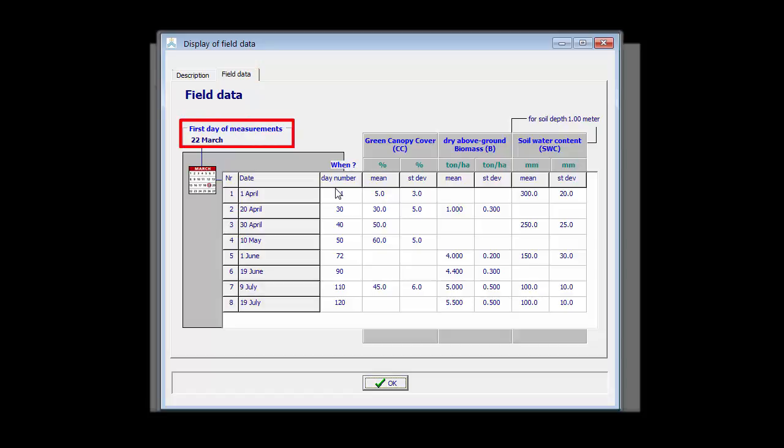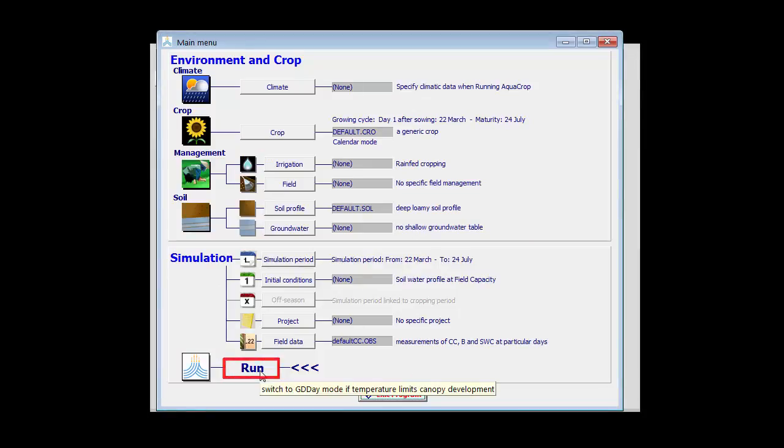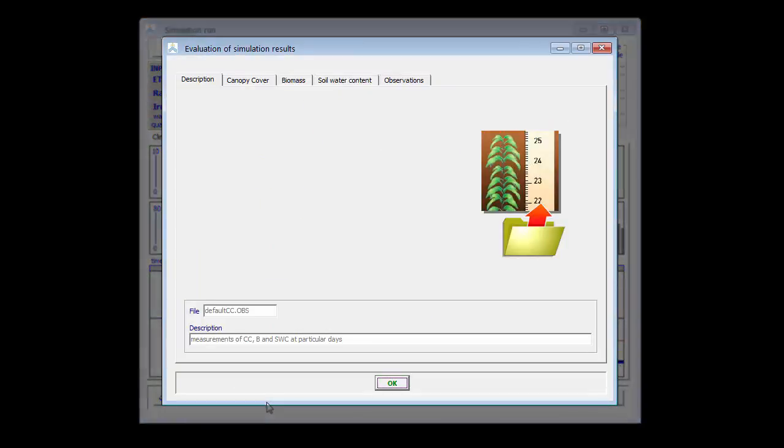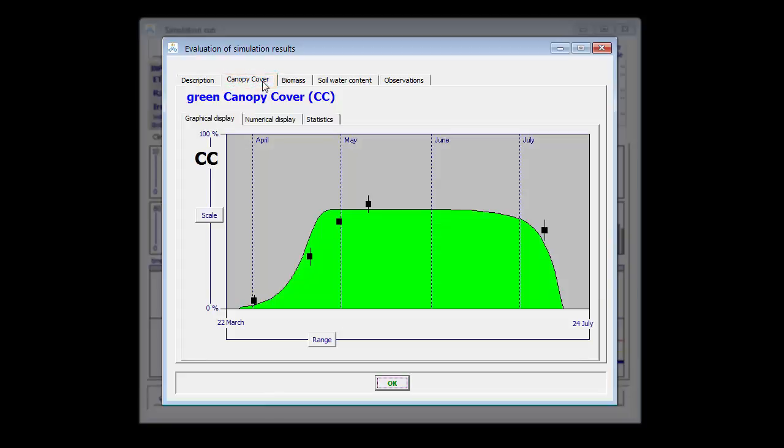Let me show you the data. So the first day of measurements was the 22nd of March. And at those days we have CC, dry above ground biomass and soil water contents. I have loaded this field data. And when I run now a simulation, we see here an extra button in the simulation run menu. If I click on it, AquaCrop allows me now to compare the simulated data with the observed data. Let us first look at the canopy cover. In green we see the simulated data and the black dots are the observations. The vertical black line corresponds with the standard deviation.